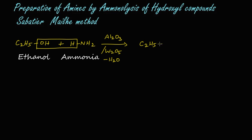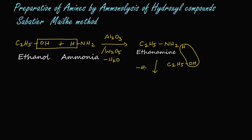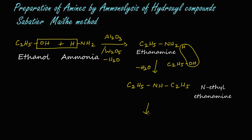We get ethylamine (C₂H₅NH₂), which is a primary amine. Again, we react it with the same ethyl alcohol (C₂H₅OH). The hydrogen from the amine group and OH from the alcohol leave as a water molecule — dehydration takes place again — and we get a secondary amine, C₂H₅-NH-C₂H₅, known as N-ethylethylamine.